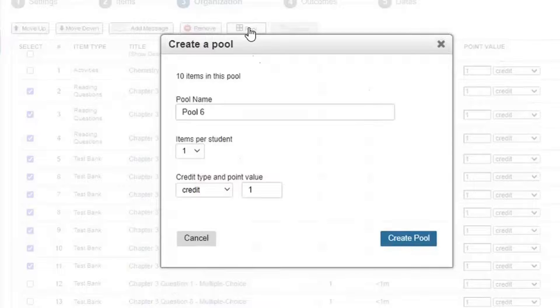Select the number of items the student sees. Select the point value per item and whether items count for credit, extra credit, or practice. All items in a single pool count the same. You can change these values later with Edit Pool.